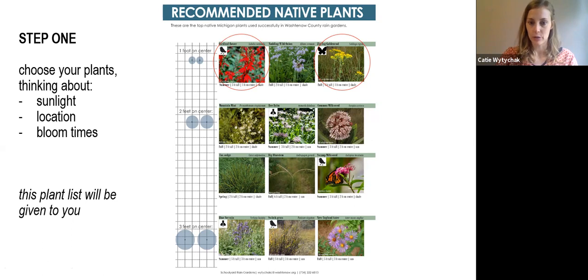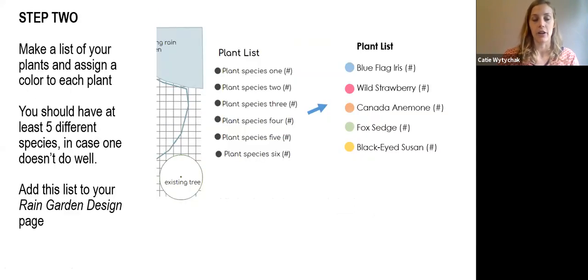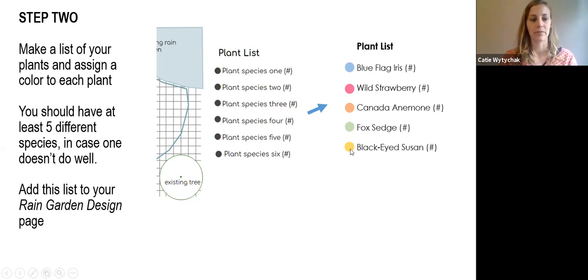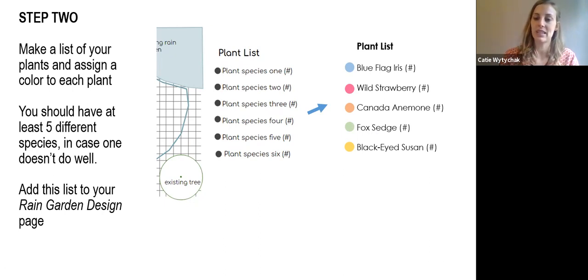Also in the description underneath the picture, it says how tall the plant is. So think about whether you want some tall plants or maybe all short plants — that's up to you. Step two: make a list of all of your plants and then assign a color to each plant. You'll be given a Google slide that has a plant list template. You will enter in each of your plant species and then assign a color — change the gray circles into whatever color you want so that each species has its own color. Make sure that you have at least five different species. Oftentimes one plant just doesn't do well, and if you had only planted two plants, then half of your garden is going to be gone. So make sure to have at least five — then if one doesn't do well, you still have quite a few others. You can do more than five species.